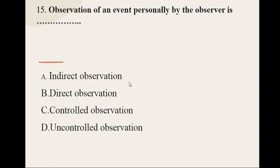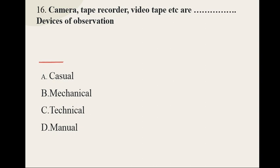Question number fifteen: Observation of an event personally by the observer is dash — options are indirect observation, direct observation, and controlled observation — and the correct option is direct observation.